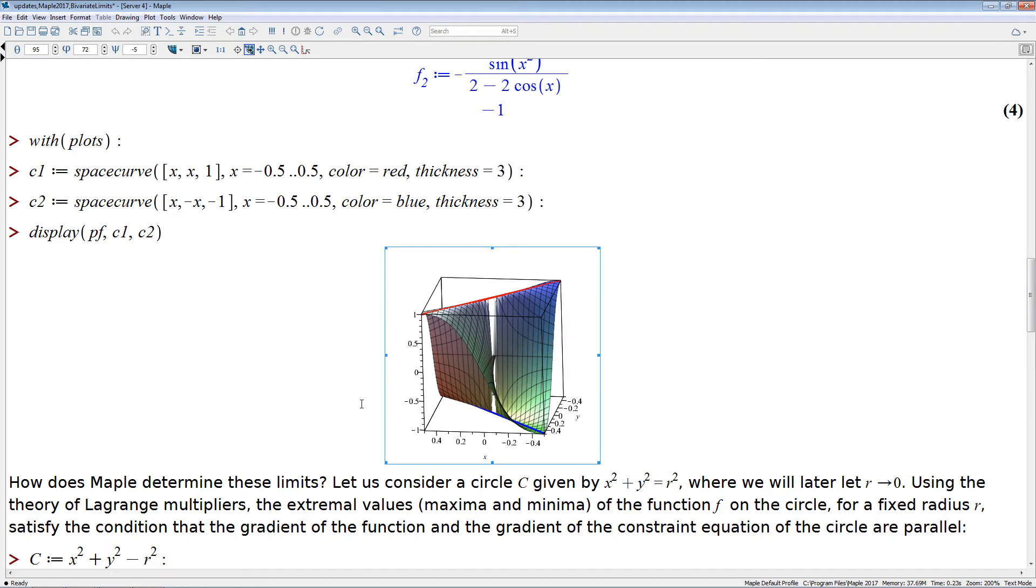Okay, so this is what Maple does automatically and you can use plots in order to verify Maple's answers. But how, what's the mathematics behind this? How is this actually done?